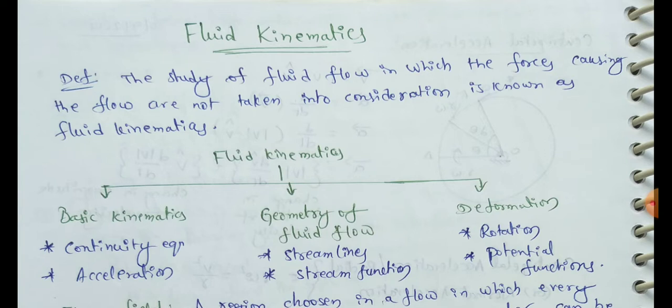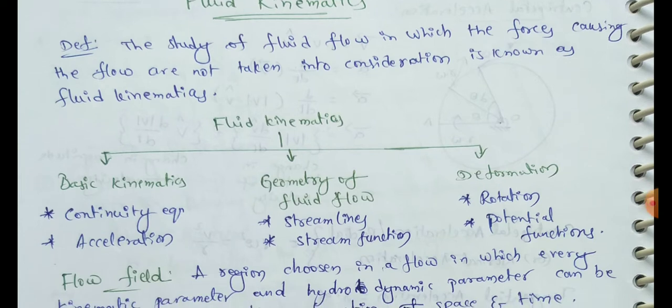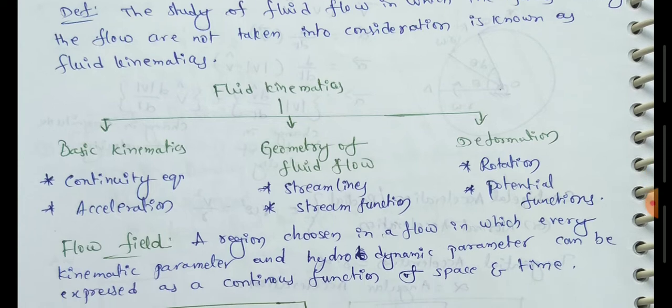Fluid kinematics is divided into three categories. First is basic kinematics, including continuity equation and acceleration. Second is geometry of fluid flow, including streamlines and stream functions. Third is deformation, rotation, and potential functions.